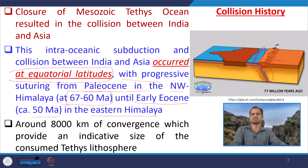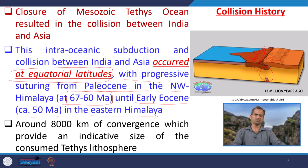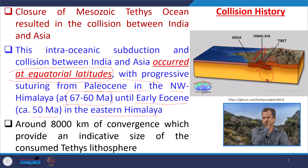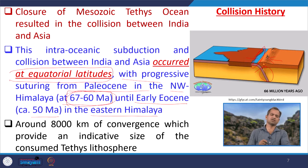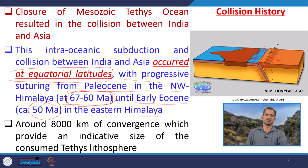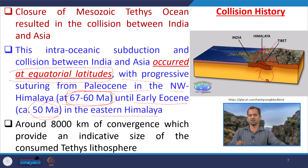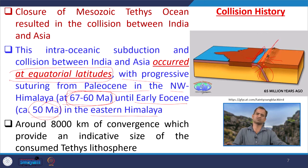The collisional history shows that both ends of the Himalaya — the Eastern and the Northwestern boundary — are not the same. The collision started first at the Northwestern boundary around 67 to 60 Ma, but at the Eastern boundary it is around 50 Ma. So this collision progressed starting from the West and moving towards the East. Around 8000 kilometers of convergence provides an indicative size of the consumed Tethys lithosphere — the total system was consumed over this length, with only remnants like the Mediterranean remaining.